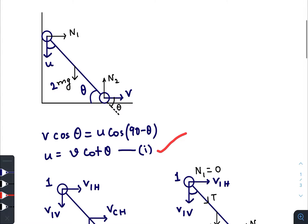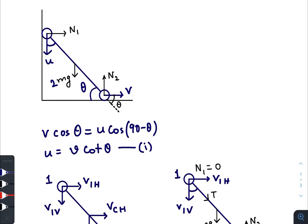After some time, just after the upper ball loses contact with the vertical wall, the normal force N₁ becomes 0. N₁ was the only force acting in the horizontal direction on the whole structure. N₁ was responsible for increasing the horizontal velocity component of the center of mass. After N₁ becomes 0, the horizontal velocity of the center of mass of the whole structure does not change.